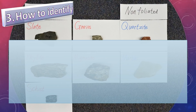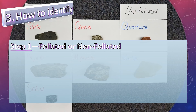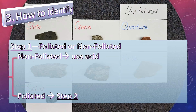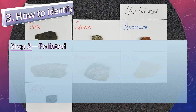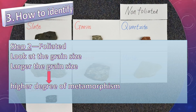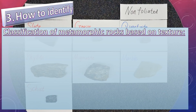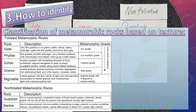How to identify? Step 1: distinguish between foliated or non-foliated. If it is non-foliated, use acid. If it has gas bubbles, then it is marble; no gas, then it is quartzite. If it is foliated, proceed to Step 2 and look at the grain size. The larger the grain size, the higher the degree of metamorphism. This table lists common metamorphic rocks and their detailed descriptions which can be used to identify the name.